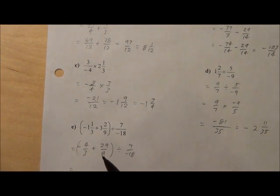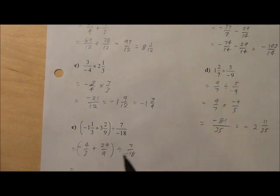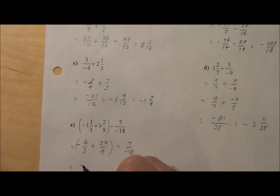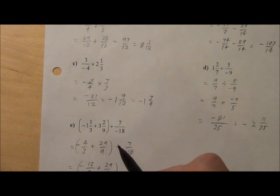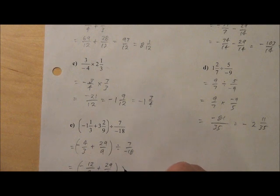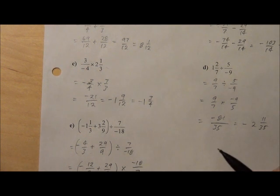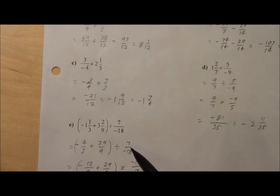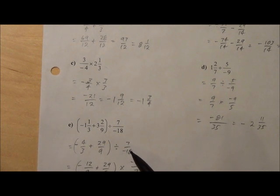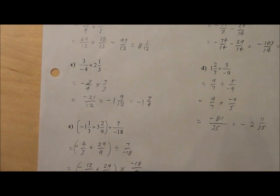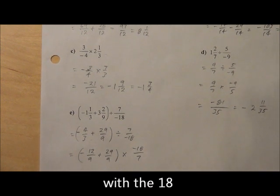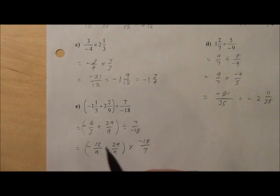We're going to do the brackets first anyways. So we see here that the common denominator would be 9, so I'm going to multiply top and bottom by 3. So we get negative 12 over 9, plus 29 over 9. And now, let's just switch it right now. So I'm going to multiply it by negative 18 over 7. Notice that the negative sign does not change. The only thing that changes is it becomes a reciprocal. So it just flips upside down, and the negative just stays where it is.